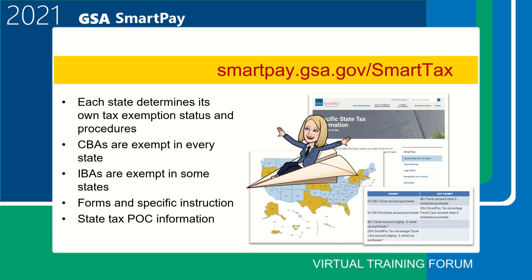The shortcut to the SmartTax page is smartpay.gsa.gov/smarttax. Once you've determined whether you have a CBA or IBA, you can go to the interactive state tax map to find out how taxes are handled in your state or where you'll be traveling. CBAs are exempt from state taxes in every state. IBAs are exempt in some states. Some states require forms while others do not, and some require special instructions. All forms and instructions can be found here.